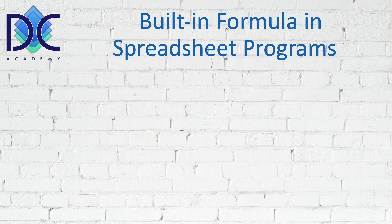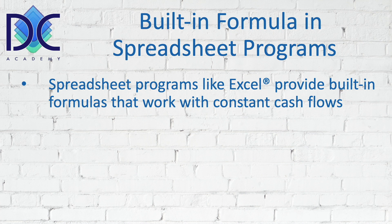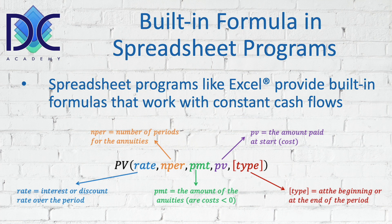Now let's look at the built-in formulas in spreadsheet programs. Programs like Excel have built-in financial formulas. The present value of a series of constant future cash flows can be calculated using the PV function. The first parameter is the rate — the percentage over the period. Be careful: if you are discounting over shorter periods such as months, the rate must be adjusted to that period. For monthly discounting, the annual interest rate should be divided by 12.